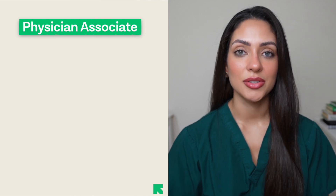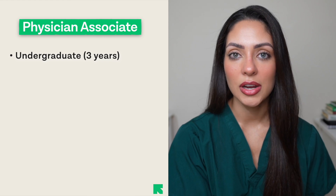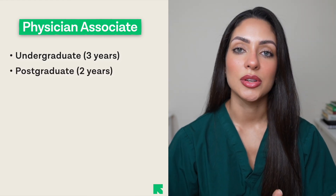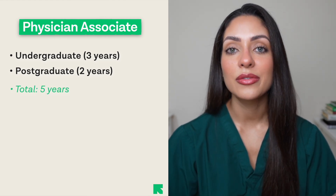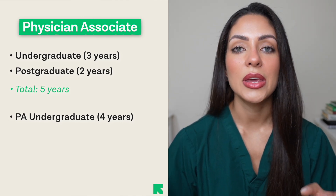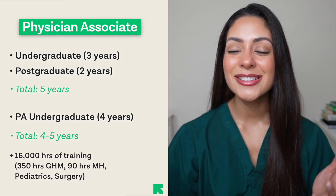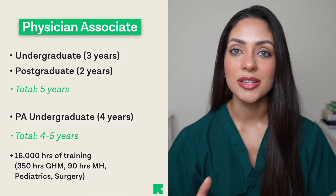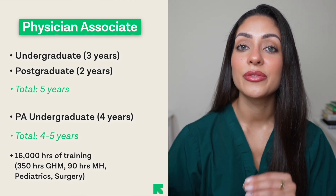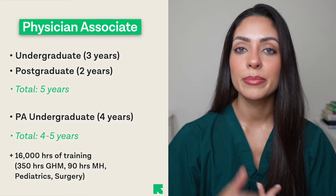A physician's associate training pathway is much shorter and not as complex. The most common route is to do physician's associate studies after a relevant undergraduate degree in a science or healthcare-related subject, followed by a two-year physician's associate diploma — typically around five years in total. The second option is a four-year PA undergraduate course directly. There will also be about 1,600 hours of clinical training across a variety of settings, including 350 hours in general hospital medicine and a minimum of 90 hours in other settings including mental health, paediatrics, and surgery.